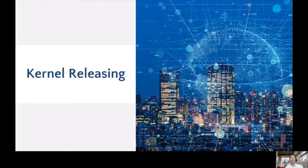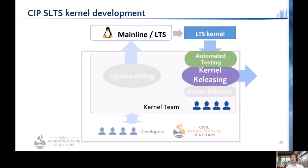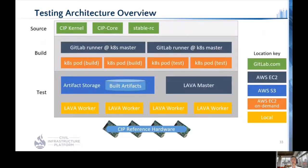Thanks. Now I'd like to talk about the other pillar — kernel releasing. Before kernel releases, we test kernels. The CIP testing team is responsible for CIP testing systems. They aim to develop and operate automated testing systems to sustain CIP releases efficiently and effectively. Our setup is split into three sections: source code is stored on GitLab, CIP builds are done in a Kubernetes cluster running on on-demand AWS EC2 instances brought up when needed and killed when not needed.